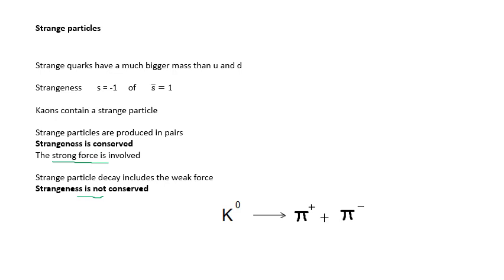This is an example, it's a K0 decays into a pi plus and a pi minus. When strange particles, when kaons decay, it produces pions, either 2 or 3 pions, depending on the kaon.